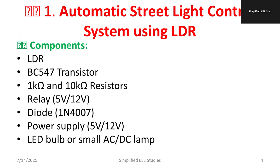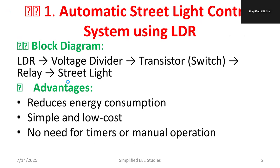Additional components include a 5-volt power supply and an LED bulb or small AC/DC lamp. The circuit works as follows: LDR feeds into a voltage divider, then to the transistor acting as an electronic switch, then the relay powers the streetlight.